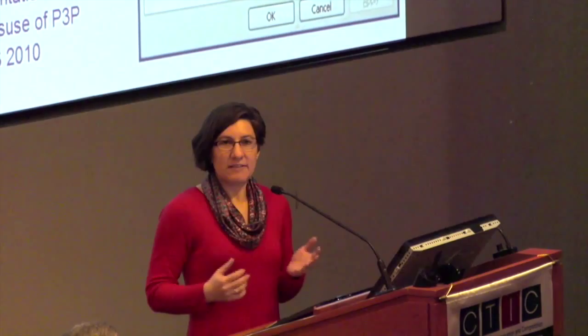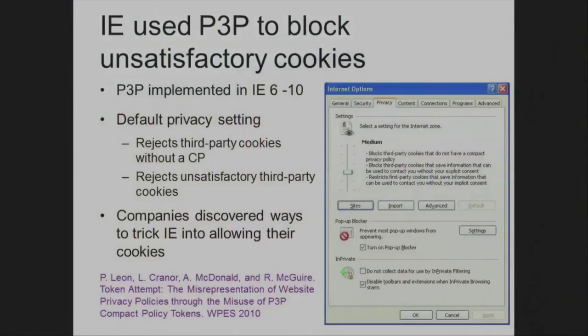Internet Explorer also implemented P3P. By default, if you never touched your privacy settings — which is like 99.999% of users — you actually have P3P in Internet Explorer since 2002. It was using P3P to block third-party cookies. It was a neat idea and one of the reasons many companies adopted P3P, until they figured out they could trick IE into not blocking their cookies without properly implementing P3P due to a technical glitch in how Microsoft implemented it. Essentially they were all lying about their privacy policy so their cookies wouldn't get blocked. Microsoft never changed the software and the FTC never went after any companies for doing this. So that was kind of the end of P3P.